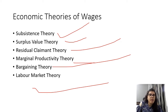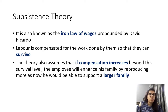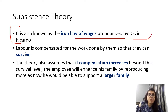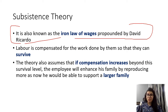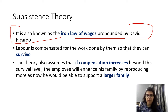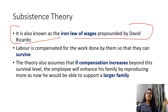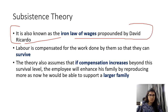These things often come in match-the-following questions. Let's start with the Subsistence Theory first. It is also known as the Iron Law of Wages, propounded by David Ricardo. So remember who has given this theory — the Subsistence Theory has been given by David Ricardo, and it is also called the Iron Law of Wages.